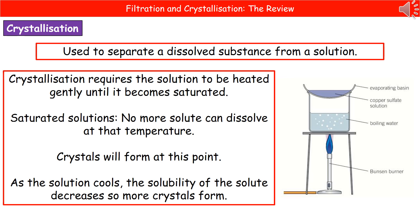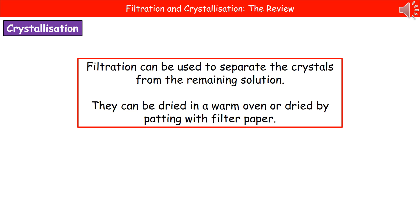When we refer to a saturated solution, we mean one that has no more ability to dissolve the solute. When the solution becomes saturated, we start to form crystals. As we then cool the solution down, the solubility of our solute decreases and we get even more crystals coming out. So you heat it over your water bath until you see crystals form, then turn off the Bunsen burner. As it cools, more and more crystals form. When you've got crystals and a little bit of solution left in the evaporating basin, you simply filter it, then dry the crystals in a warm oven or pat them with filter paper — and you're left with just the crystals of what was our solute.